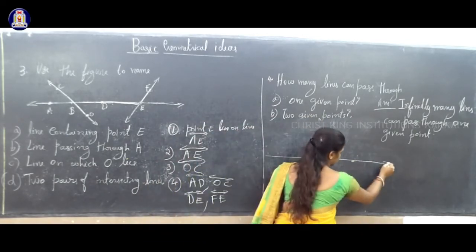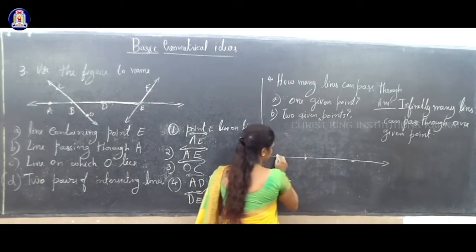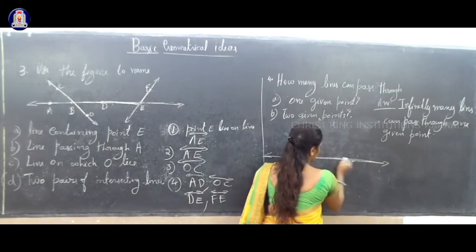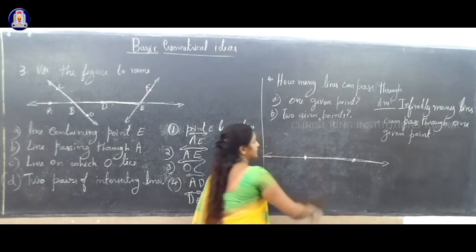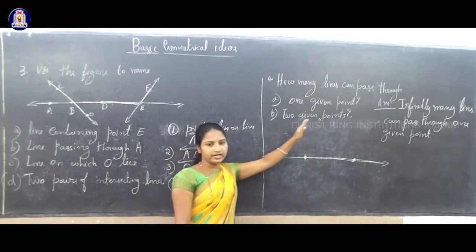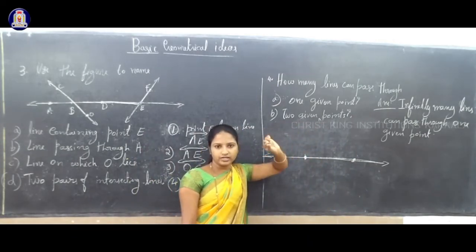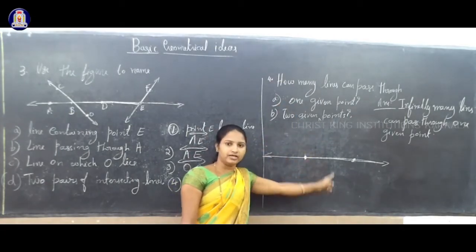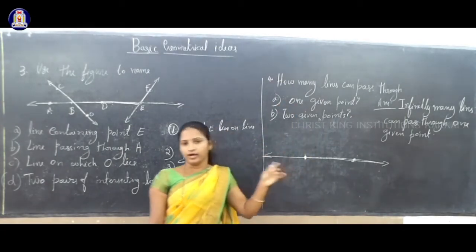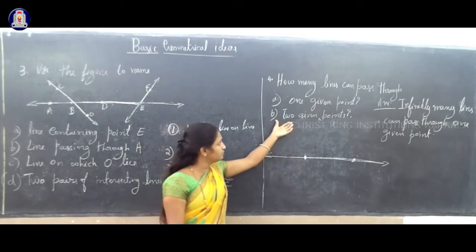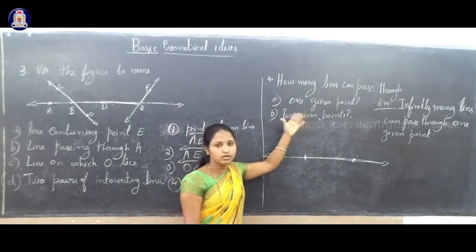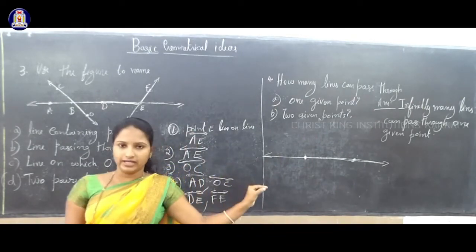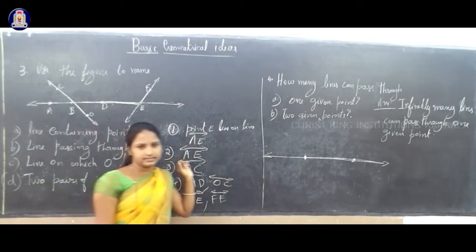Only one line can pass through two given points. If one point is given, we can draw infinitely many lines. But if two given points are there, we can draw only one line segment or one line.